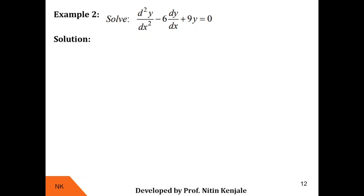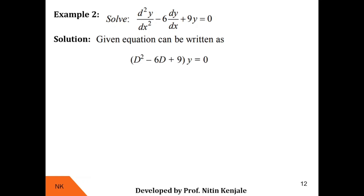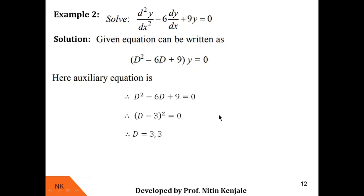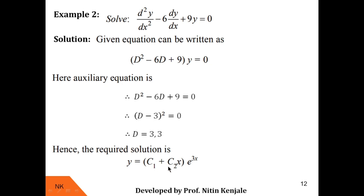Next example: the differential equation is (D² − 6D + 9)y = 0. The auxiliary equation is D² − 6D + 9 = 0. Solving, the roots are 3, 3 — real and repeated. Therefore, CF = (c1 + c2x)·e^(3x). Since RHS is 0, the particular integral is also 0, so the complete solution consists only of the complementary function.